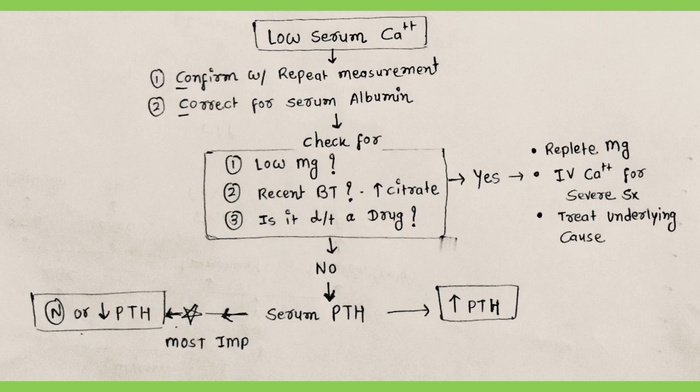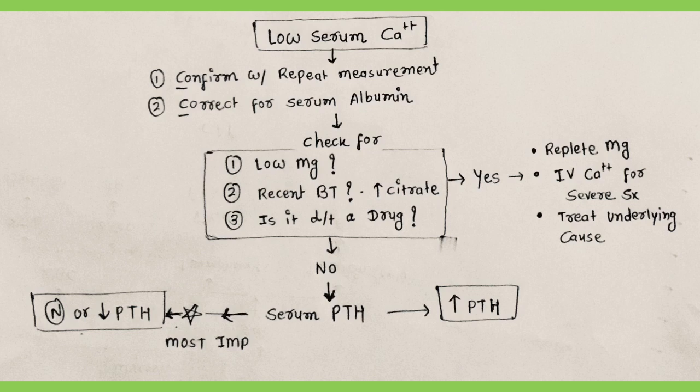After addressing those causes, focus on the PTH level. Hypocalcemia may develop when PTH secretion is insufficient. Therefore, patients with hypocalcemia should have a serum PTH level measured to exclude hypoparathyroidism. PTH is the hormone that regulates minute-to-minute calcium concentration, while vitamin D regulates calcium levels over the longer term.